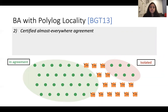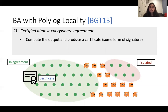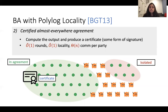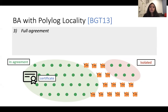The second step is where parties reach certified almost-everywhere agreement. The parties that already reached agreement collectively generate a certificate — a proof that allows them to prove that agreement was reached via honest means. However, this step requires linear per-party communication, and in order to enable verification of the certificate, we need to make use of a public key infrastructure.